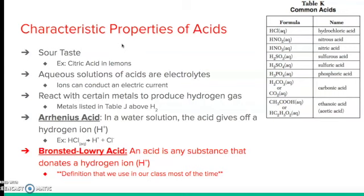We will be using the Bronsted-Lowry acid definition for the most part in this class because it makes it easiest to identify acids. You'll also notice that Table K is in your reference table — that lists some common acid names, like hydrochloric acid, nitrous acid, nitric acid, and so forth. That's a good place to go when identifying acids.